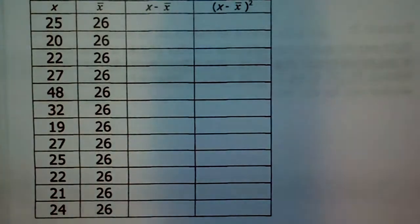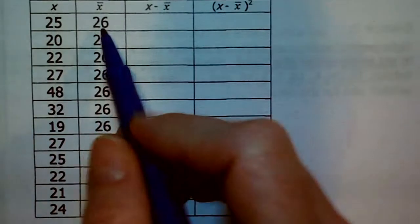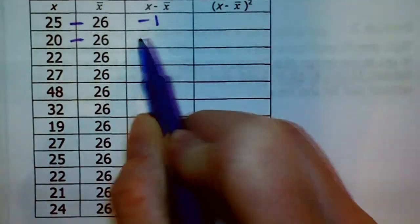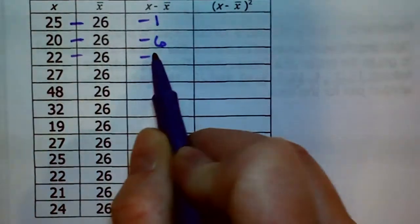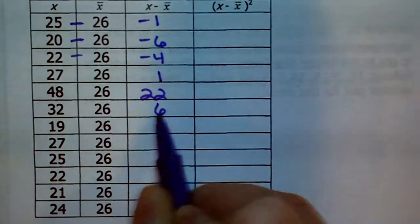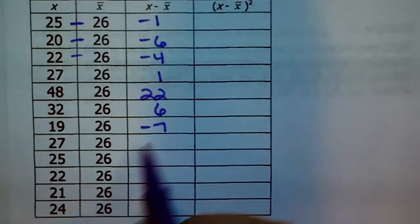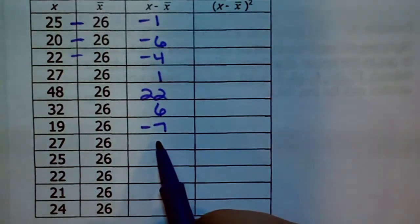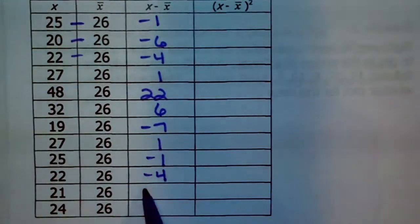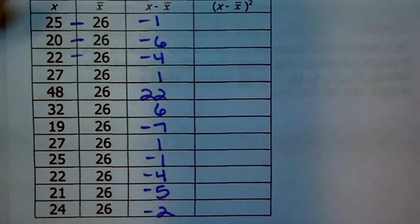Welcome back — congratulations for trying this on your own. Here we should have: 25 minus 26 is negative 1, 20 minus 26 is negative 6, then negative 4, 1, 22, 6, 19 minus 26 is negative 7, 27 minus 26 is 1, then negative 1, negative 4, negative 5, and negative 2. So we took each original data value, subtracted the mean from it, and listed our result.